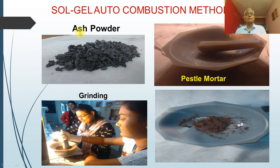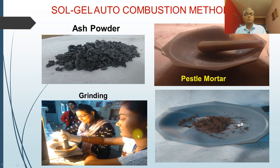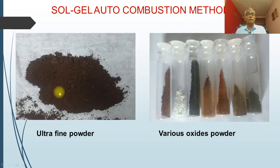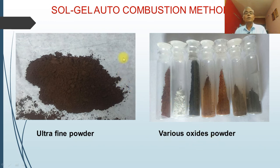The resulting ash or powder can be crushed in a pestle and mortar, or sometimes a ball milling grinder can be used for grinding. Finally, we get an ultra-fine powder, which is packed in a bottle and sent for analysis. This is how the simple sol-gel auto combustion method is performed, which can be easily done in the laboratory.